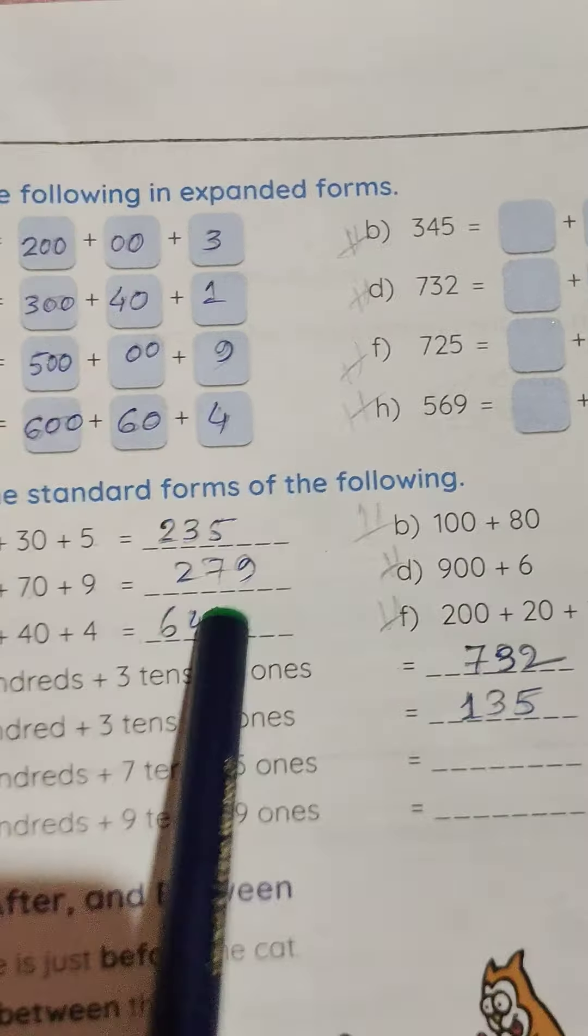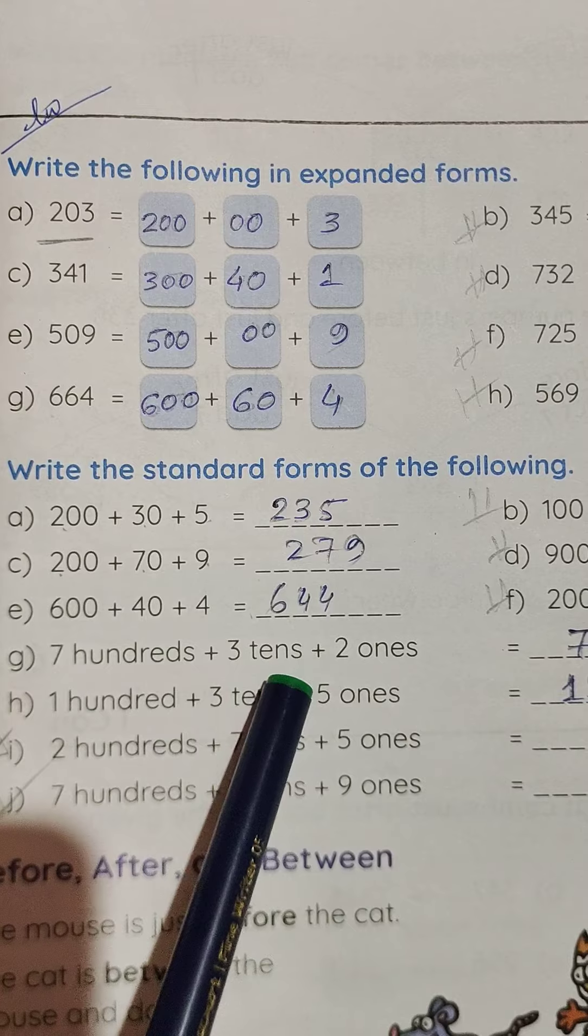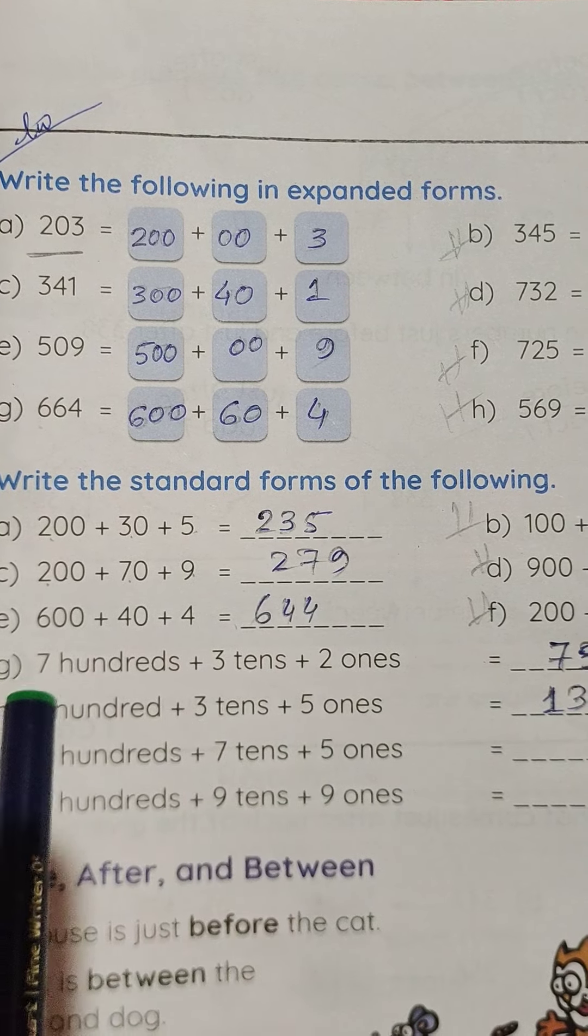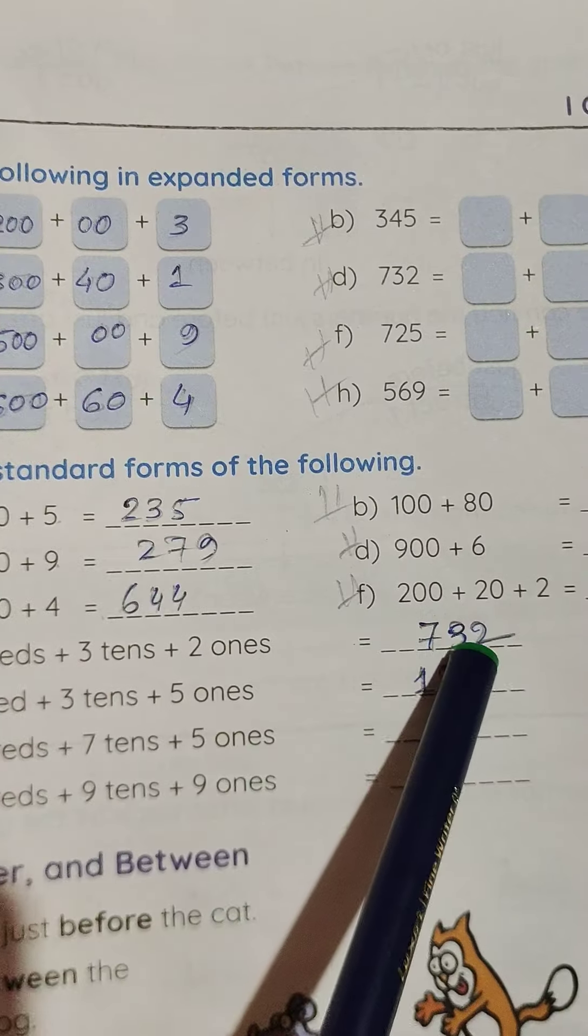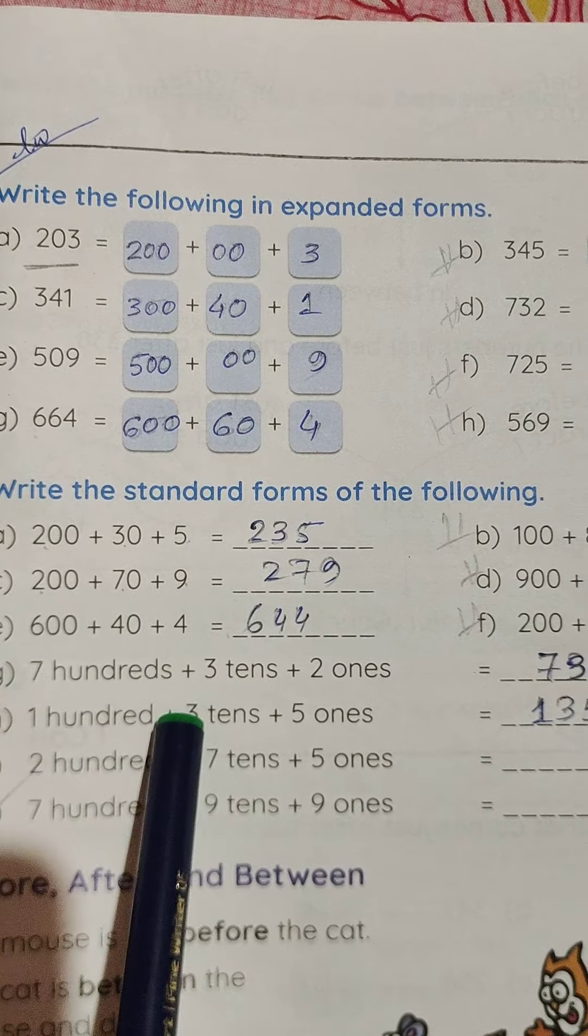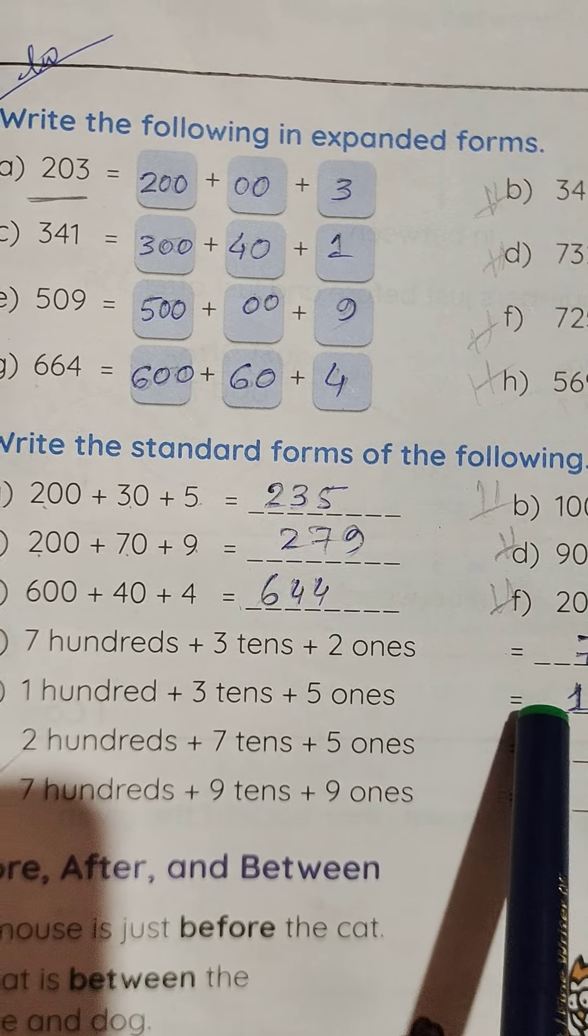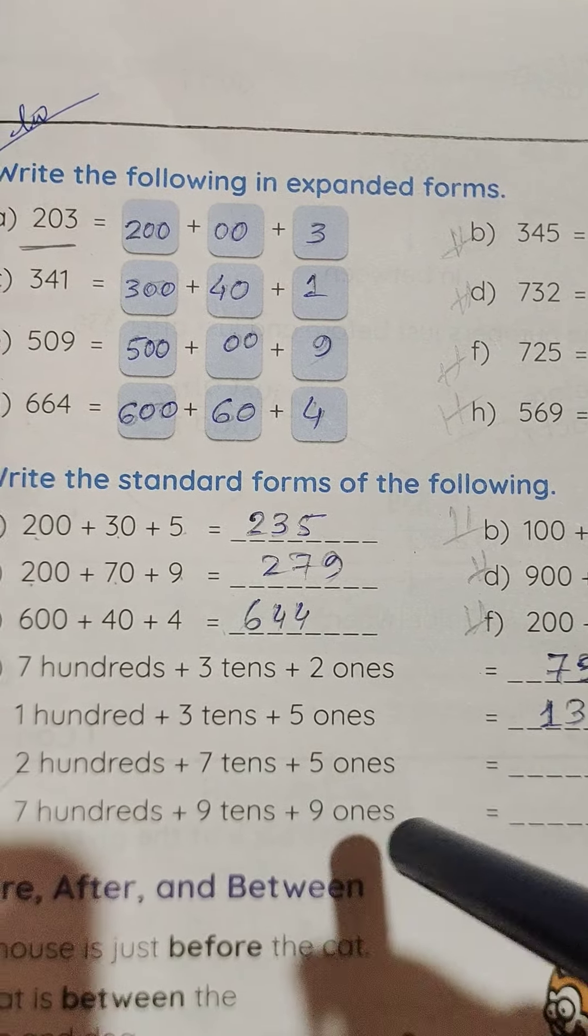Try this. 700 plus 3 tens plus 2 ones, it will be 732. 100, 3 tens and 5 ones, it will be 135. Try this.